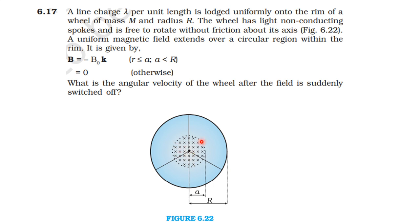When the field is switched off, the initial and final flux changes, inducing an EMF. This induced potential difference around the rim creates an induced electric field. The induced electric field exerts a force on the charges, producing a torque, which causes angular acceleration alpha, and the wheel changes from omega equals zero to a certain angular velocity.